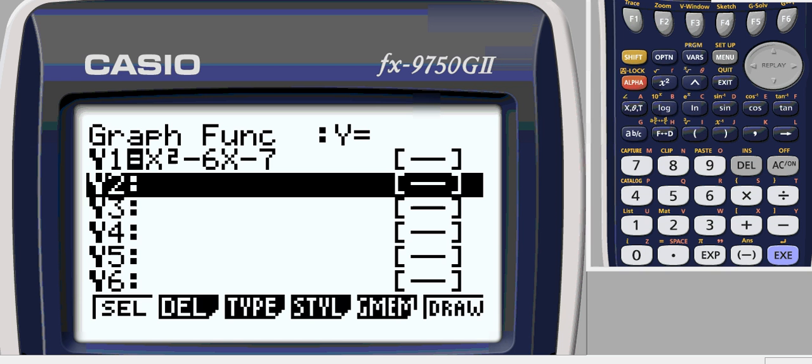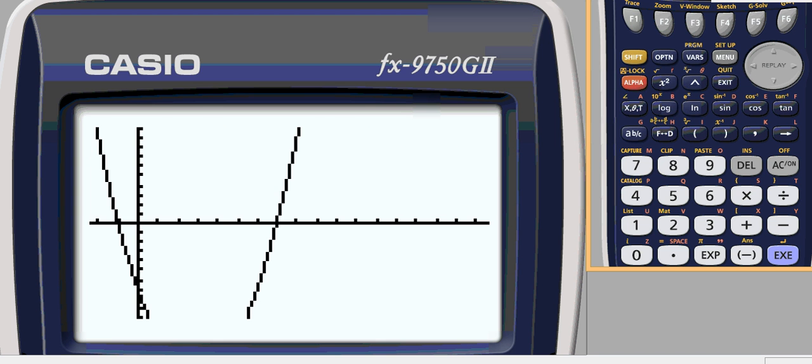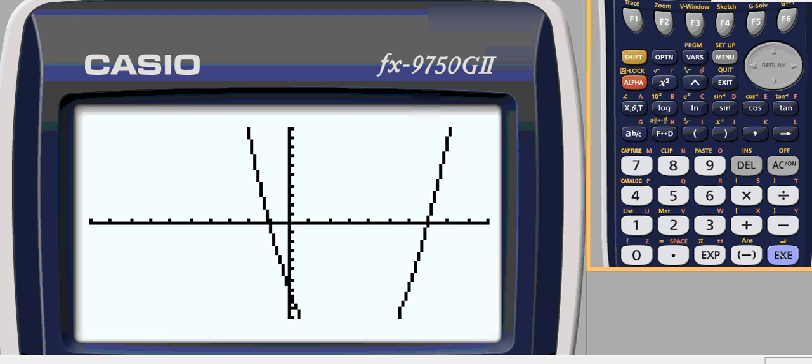We'll graph it on our calculator. x squared minus 6x minus 7. Go to a standard window so we can see where it looks like it crosses.